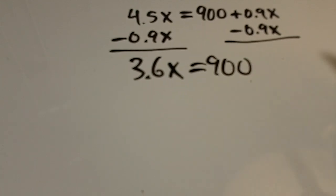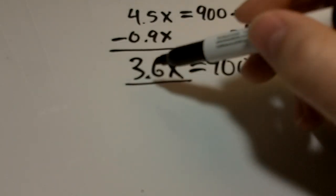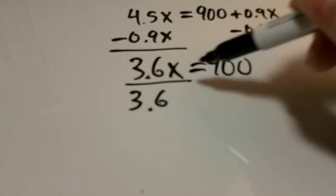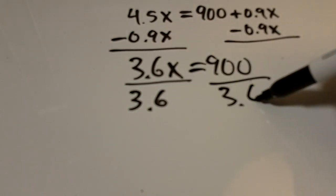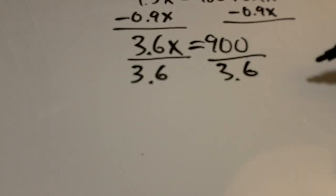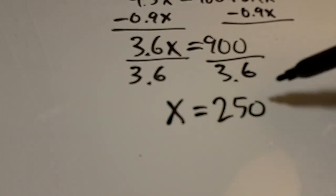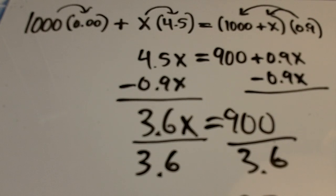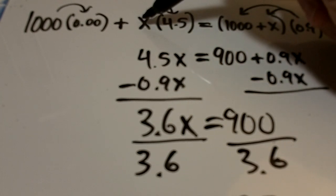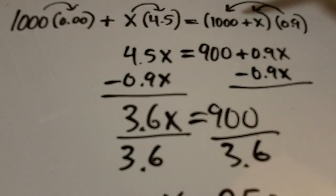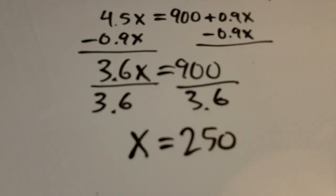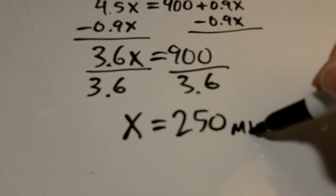To isolate this x we need to divide both sides by 3.6. And when we do that what we get is x equals 250. Looking back up here our unknown x represented milliliters of solution on this side of the equation and on this side. So x equals 250 milliliters.